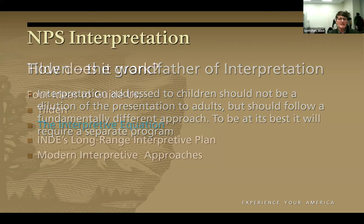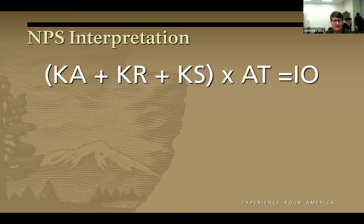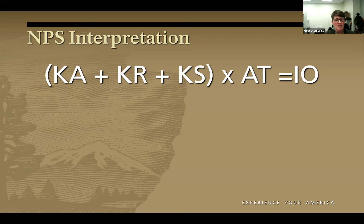With those guiding principles in mind, this is how the science of interpretation works — the interpretive equation. It's not math, or I wouldn't be able to do it. The equation is: KA plus KR plus KS, times AT, equals IO. We're going to take each of these pieces in sections and talk about what they are and what they mean.